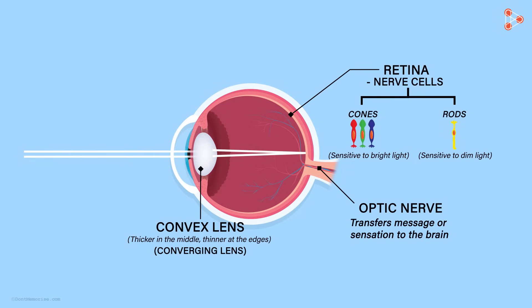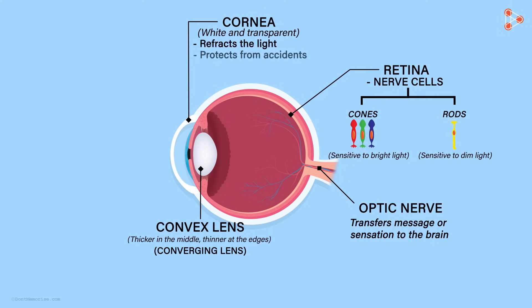Let's quickly recap what we learned about the human eye. Human eye has a roughly spherical shape. The outer part of an eye called the cornea is a thick white transparent wall which protects the eye from accidents and keeps the foreign particles from entering inside.